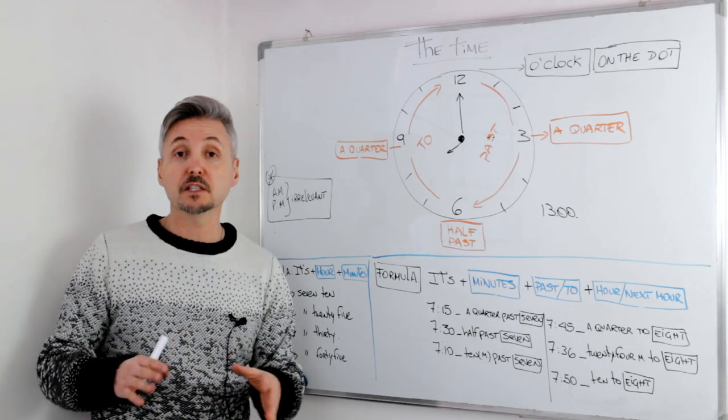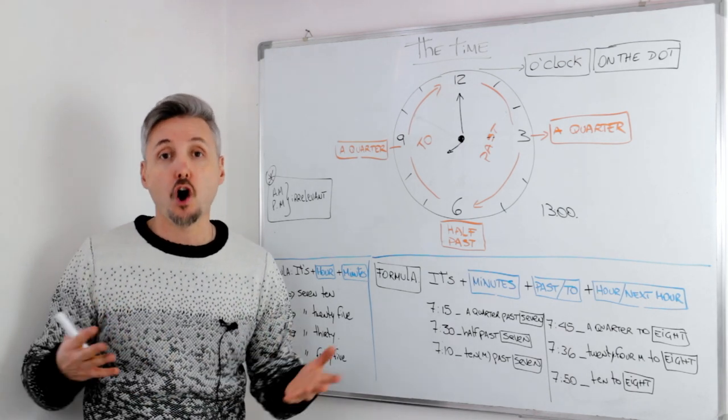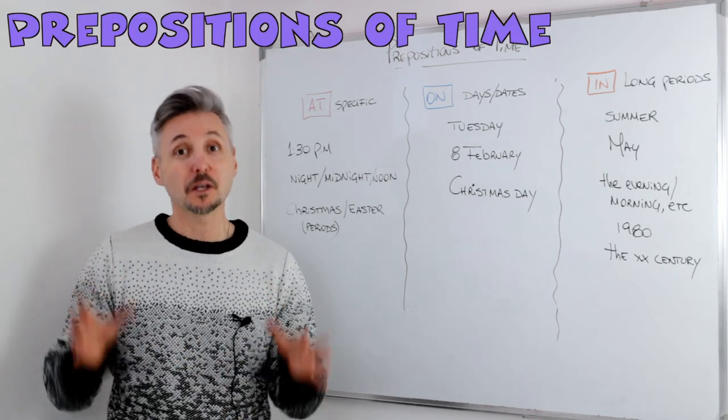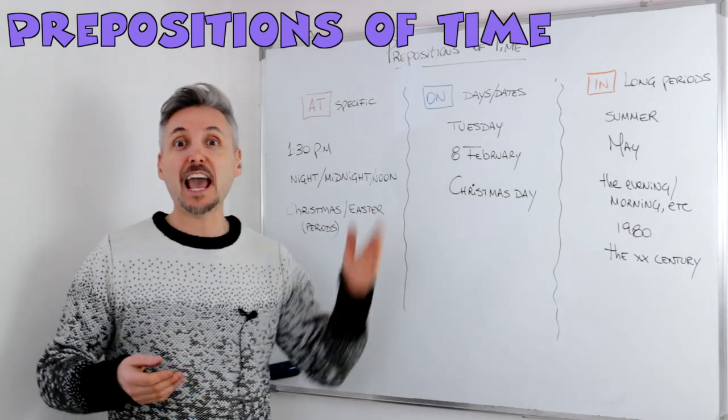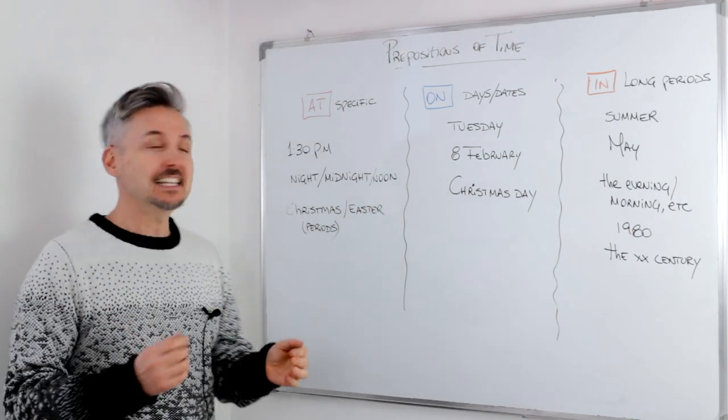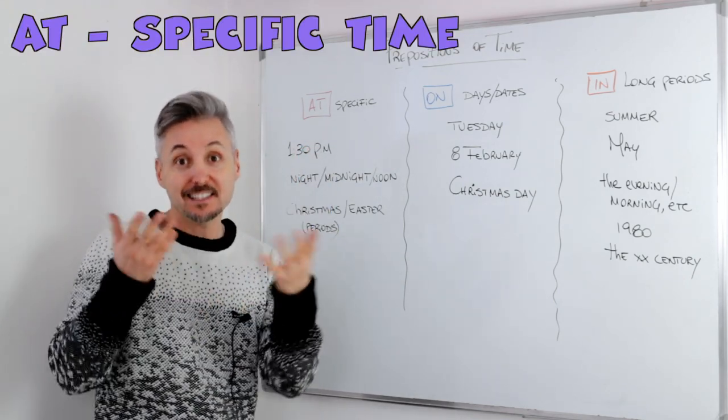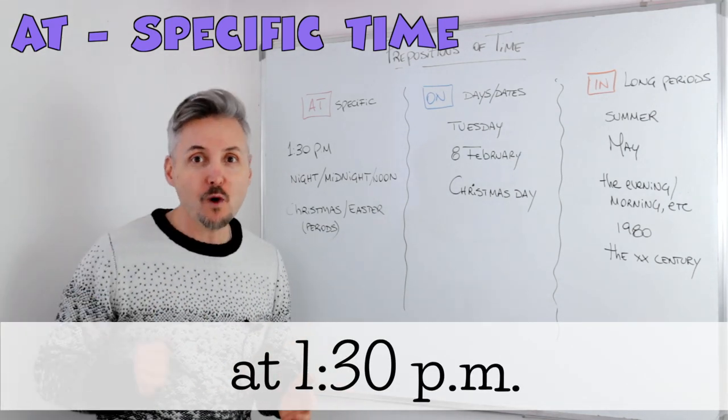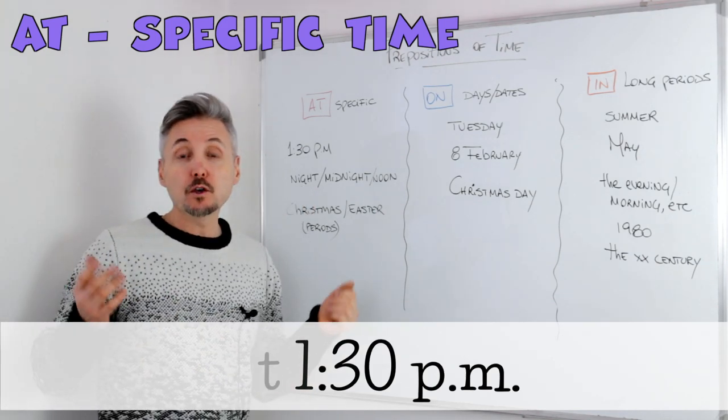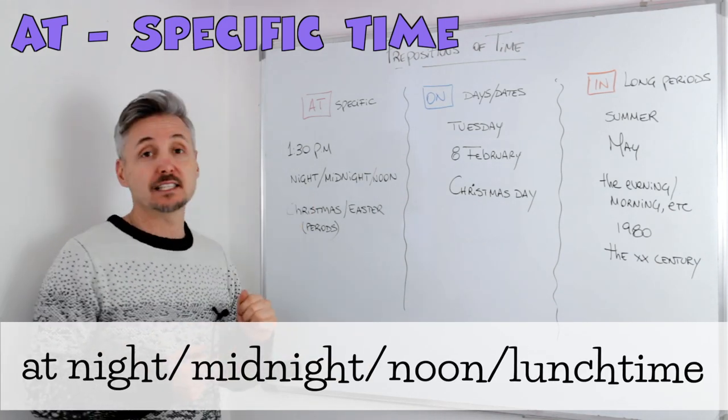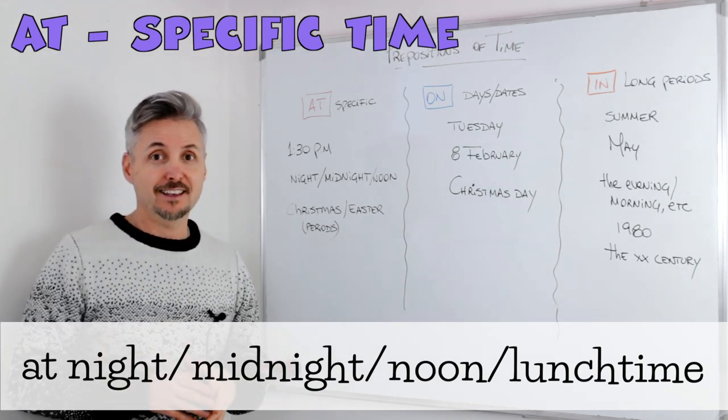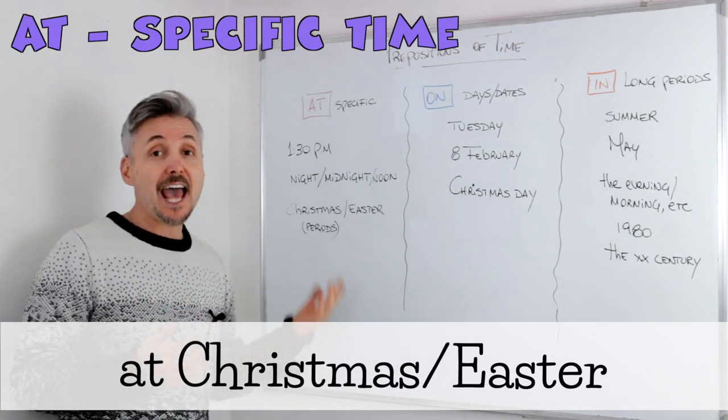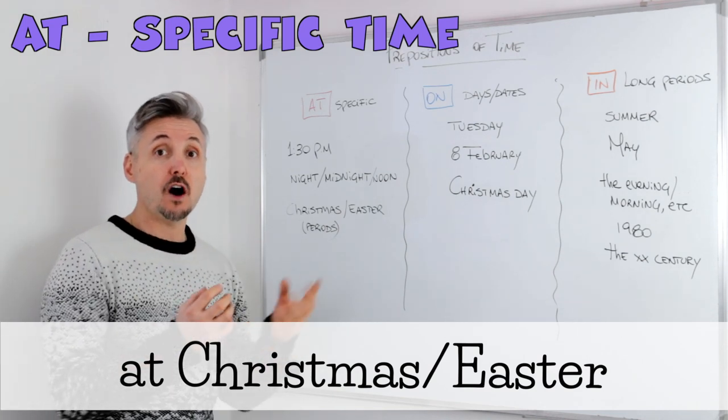Now I'm going to explain the prepositions of time: at, in, and on. So hopefully in English we have rules, and sometimes these rules work, so this is the case with at, on, and in. At is used for specific times, for example, to say the time, so at 1:30 p.m. or at half past one. We also use at for at night, at midnight, at noon, at lunchtime. Then we use at for specific periods, for example, at Christmas, at Easter, so the period of Christmas, the period of Easter.